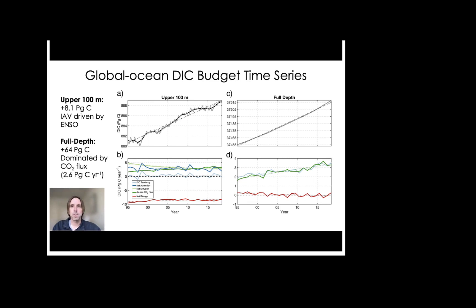So having shown the climatological results, we next move on to the global ocean DIC budget time series, which are integrated in both the upper 100 meters, and that's shown in panels A and B on the left-hand side, and across the full ocean depth, which is shown in panels C and D on the right-hand side. So the top row, which is A and C, shows the DIC mass, and the bottom row shows the corresponding budget term time series.